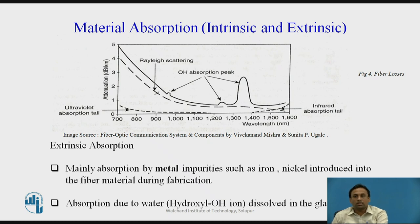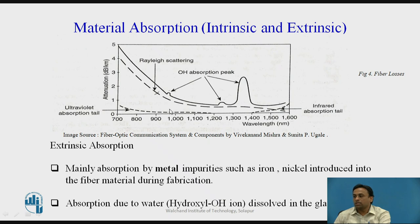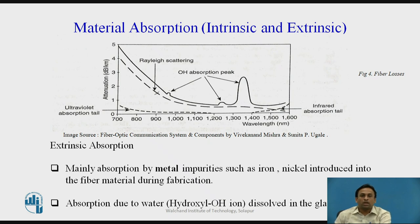Water in silica forms silicon-hydroxyl (Si-O-H) bonds. These bonds have fundamental absorption at 2700 nm; however, harmonics or overtones of this fundamental absorption occur within the region of operation. As shown in the figure, O-H absorption peaks appear near 1000 nm, 1200 nm, and 1400 nm. These absorption peaks define three preferred operating windows: the first at 850 nm, the second at 1300 nm, and the third at 1550 nm. Fiber optic systems operate at wavelengths defined by these windows.